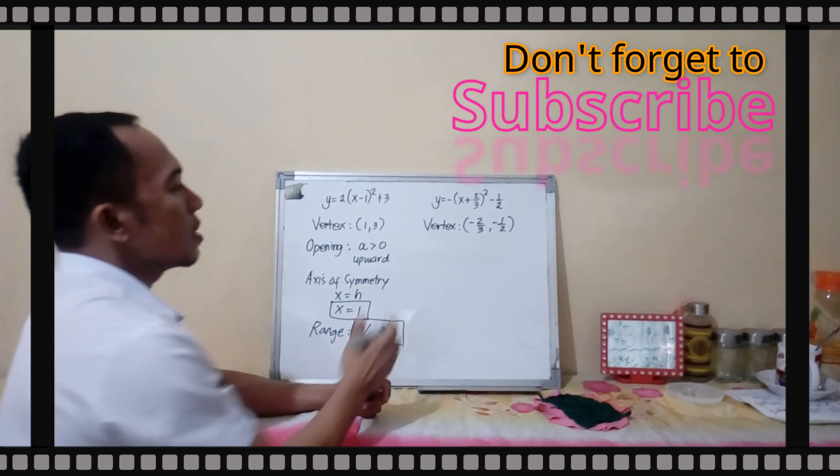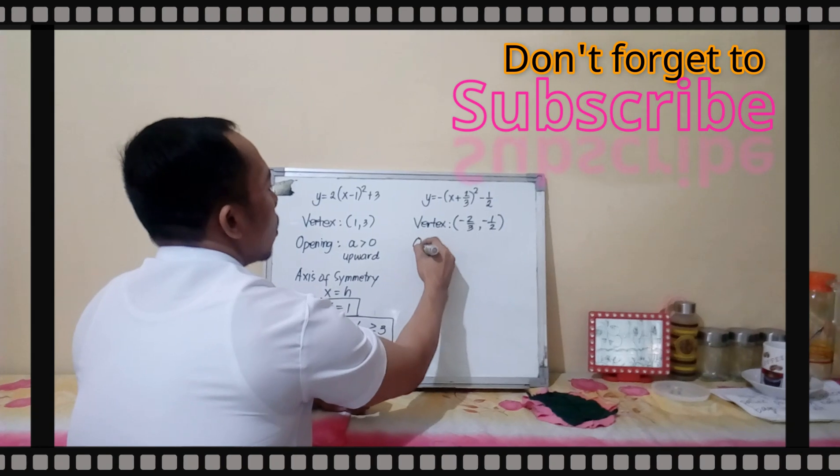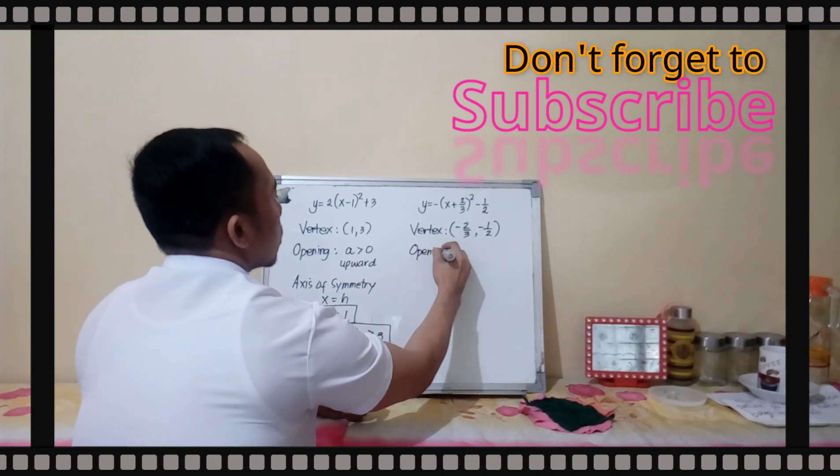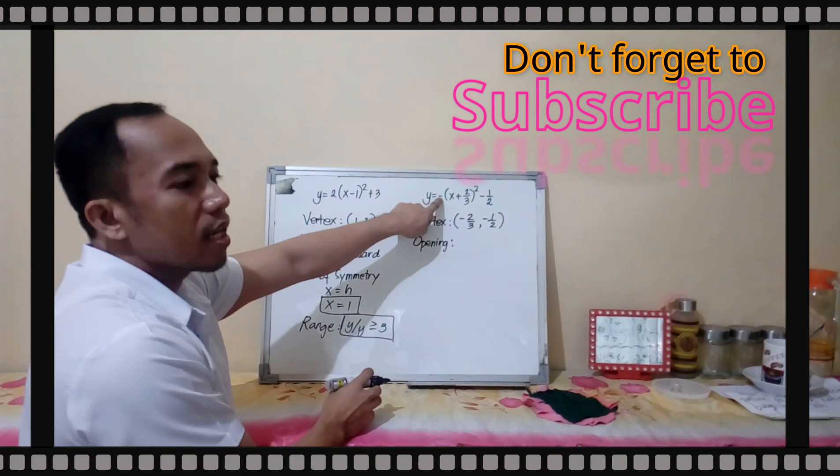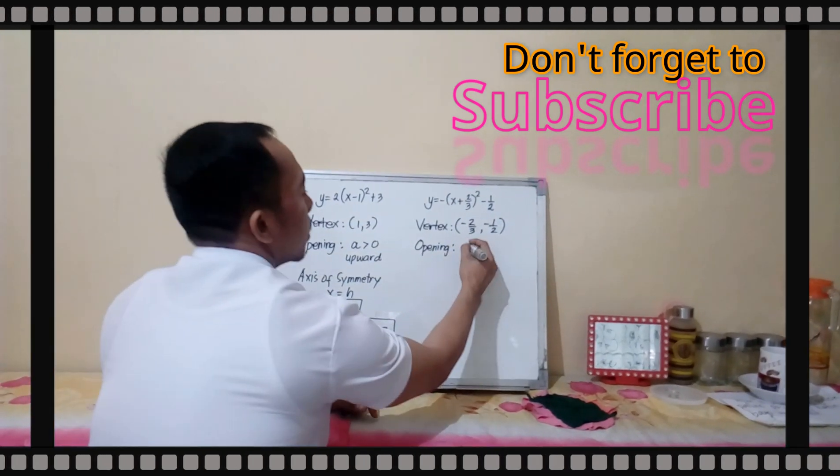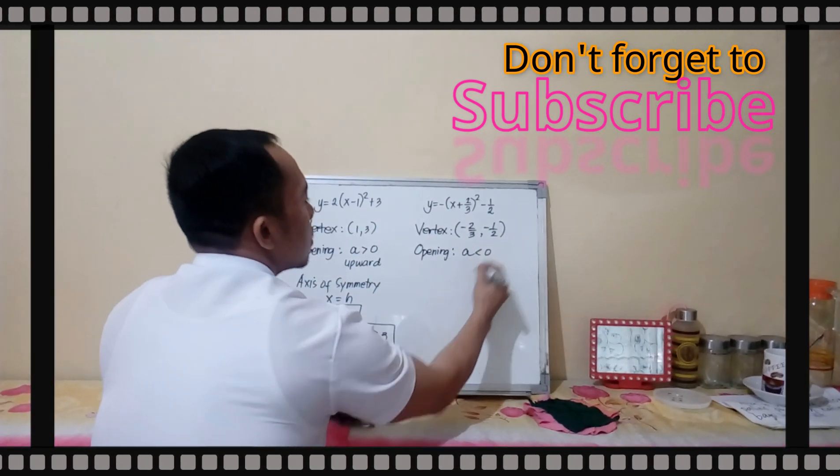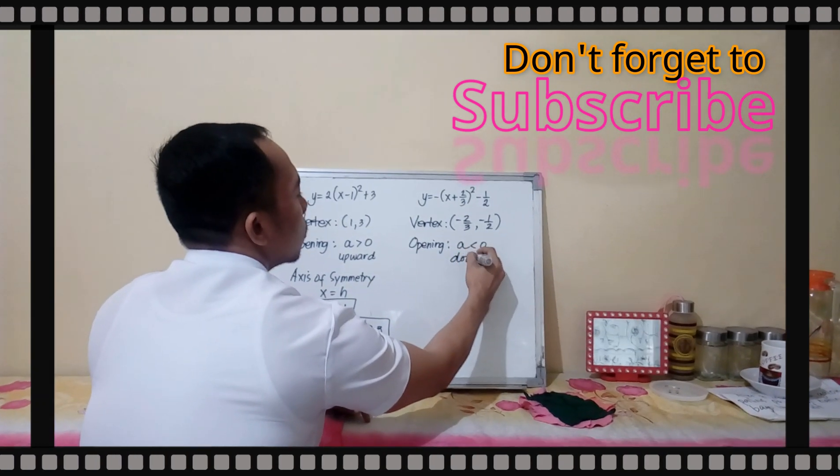You can also get the opening since your a is less than 0 because of this negative. This is negative 1. A is less than 0. Then, the opening is downward.